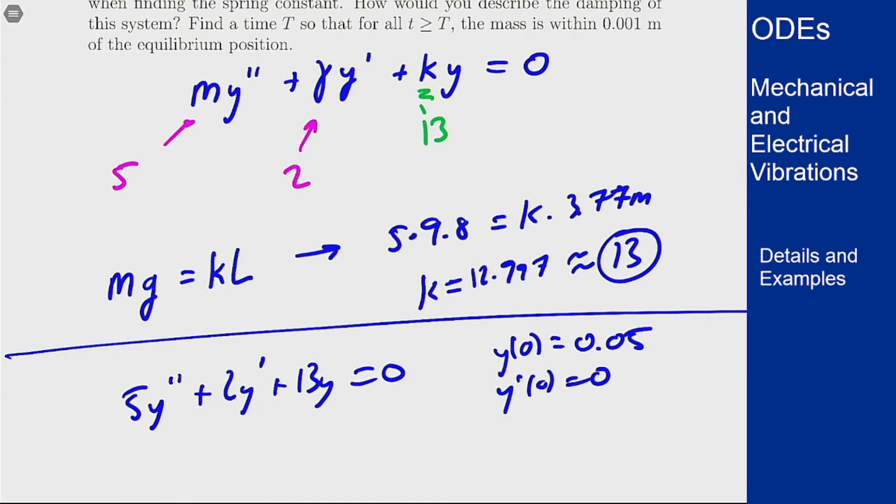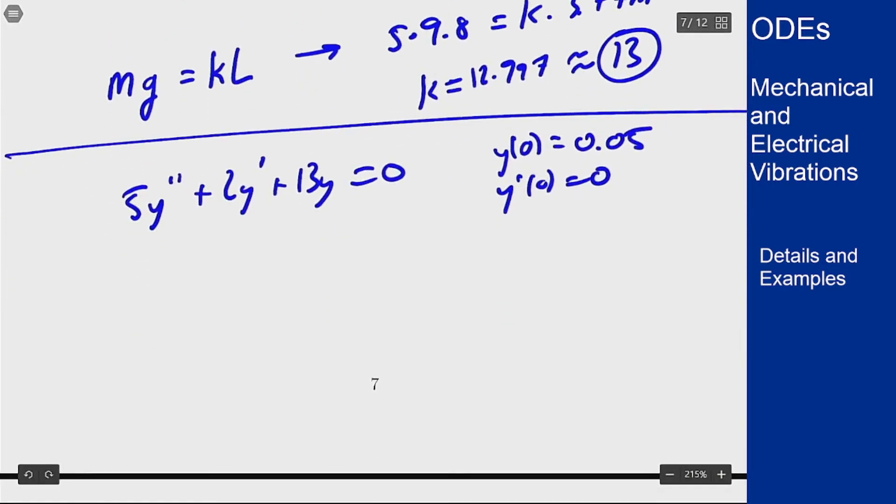So y prime of 0 is 0. Now we're trying to solve this problem. To do that we will start with the characteristic equation of the system which is 5r squared plus 2r plus 13 equals 0.